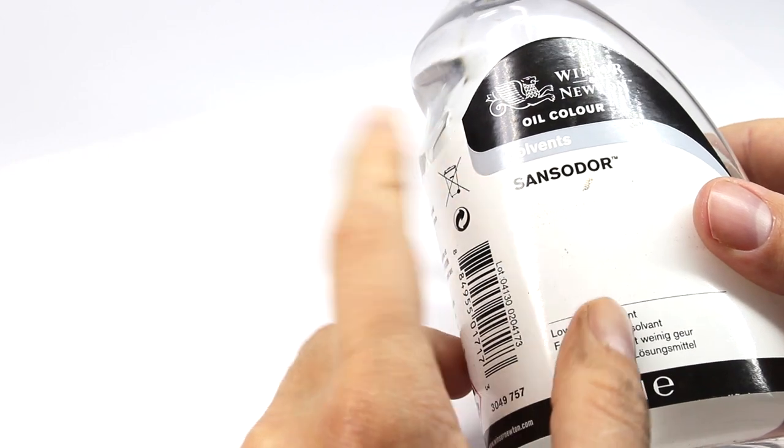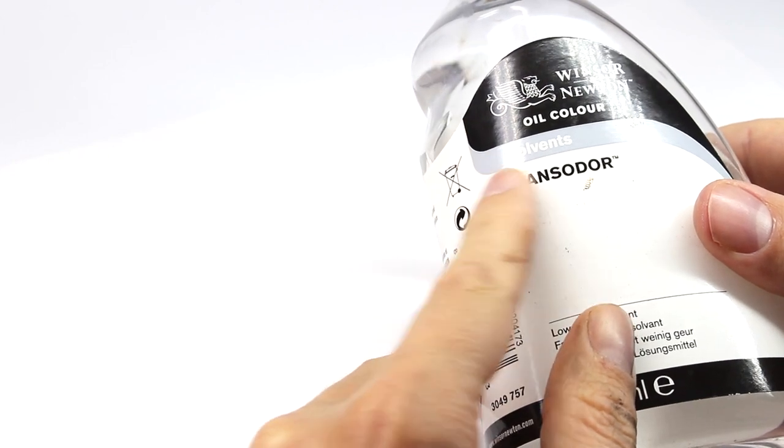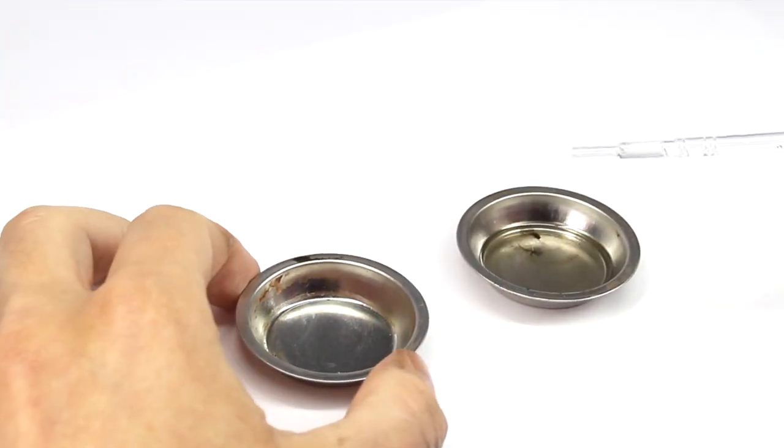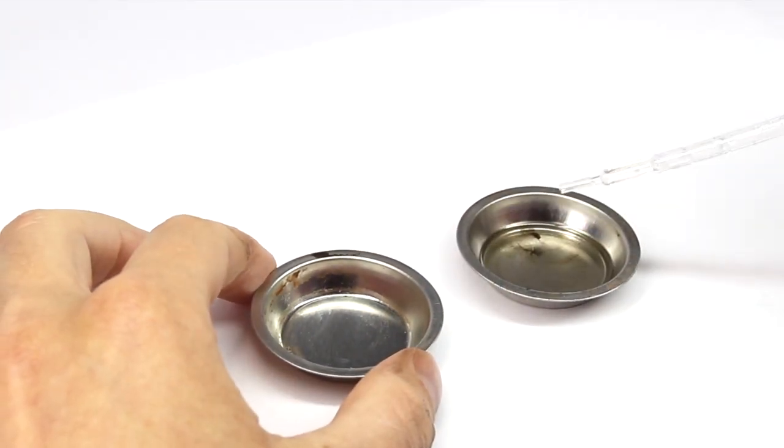The enamel wash has a solvent base, so we need to thin it with a solvent thinner rather than water. This has a much lower surface tension than water, so it should make the process even easier.